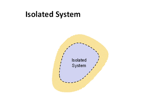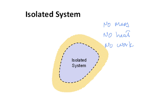Sometimes you have an isolated system — that means not only no mass transfer, but also no heat transfer and no work. There's no communication between the system and the surroundings. If the system undergoes a process from initial state 1 to final state 2, the energy of the isolated system is conserved.